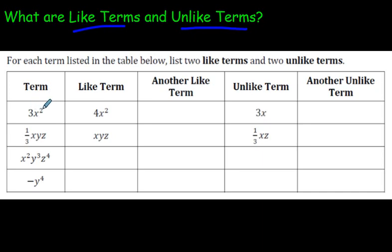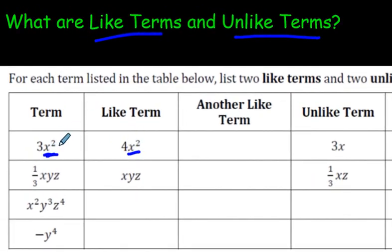So 3x² and 4x², they are like terms. How come? Because if you look at the variable, which is this part right here, the number in front is called a coefficient, but if you look at the variable for both of these, it's x².